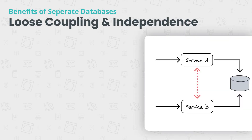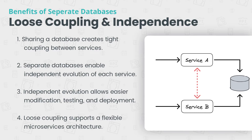Loose coupling and independence. Sharing a database creates tight coupling between services. Changes made by one service can have unintended consequences on others. With separate databases, each service can evolve independently, making it easier to modify, test, and deploy new features without impacting the entire system. Loose coupling fosters flexibility and promotes a microservice architecture, where each service can be maintained and updated independently without disrupting the entire system.